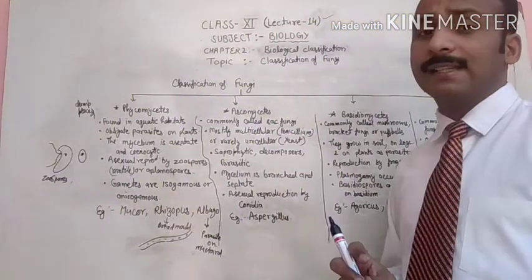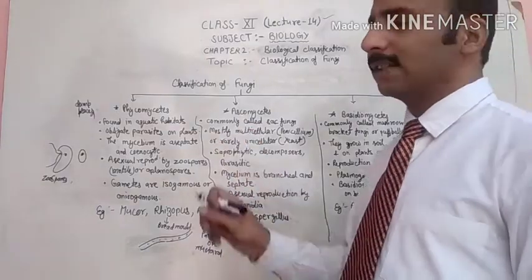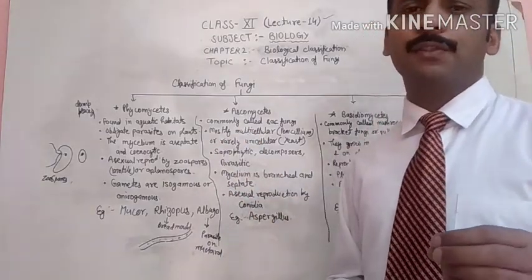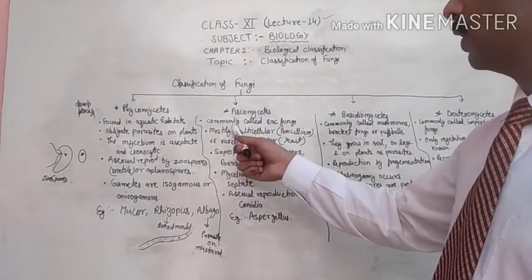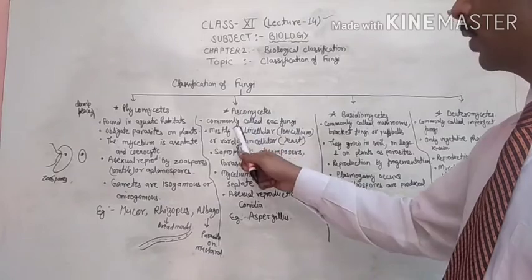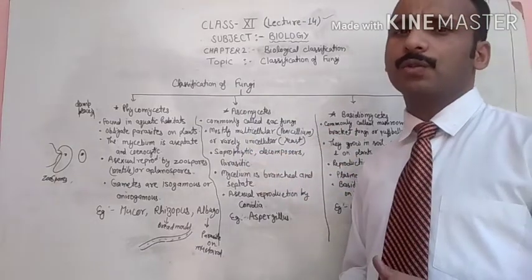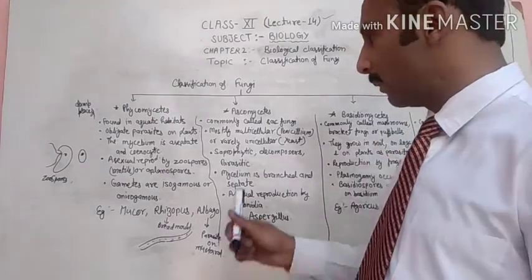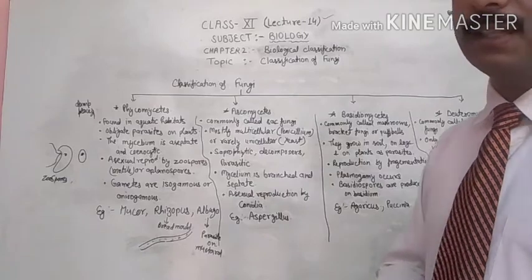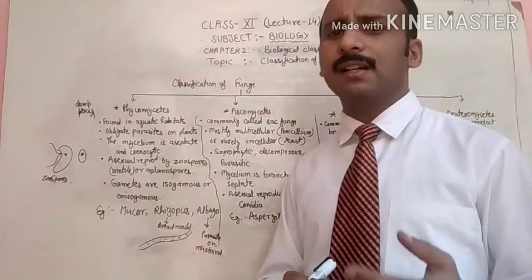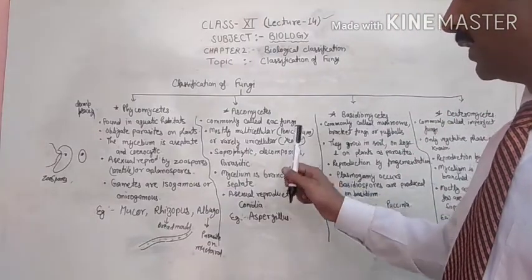The second group of fungi is Ascomycetes. The name is given because they have a sac-like structure, so they are commonly called sac fungi. Mostly they are multicellular — for example, Penicillium — but a few are unicellular, such as yeast.